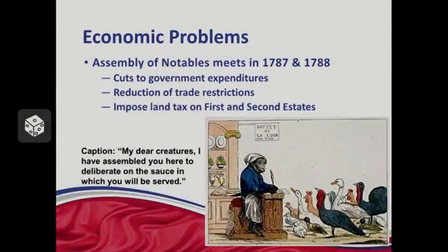They were not going to like that. A political cartoon shows the Finance Minister saying to the assembled estates, 'My dear creatures, I have assembled you here to deliberate on the sauce in which you should be served' — basically asking how they're going to be cooked. Not every member of the first and second estates dismissed the plan; many recognized they'd have to pay some taxes to pull France out of its problems. But if they were going to pay taxes, they wanted political power in return.